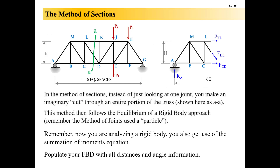So how do we do the method of sections? You're going to end up cutting a section through multiple members and keeping multiple joints. When you keep multiple joints, all of a sudden you have distances that matter. So this is no longer a rigid particle problem — this is a rigid body problem, getting back to the more recent free body diagram work where you draw distances as well as angles. You have to draw more information on these free bodies, but they can get you what you want faster.